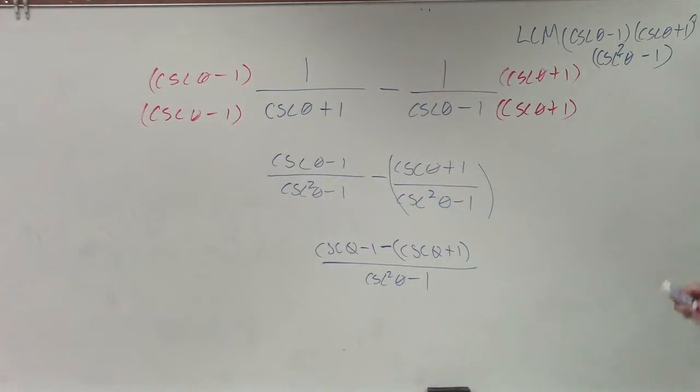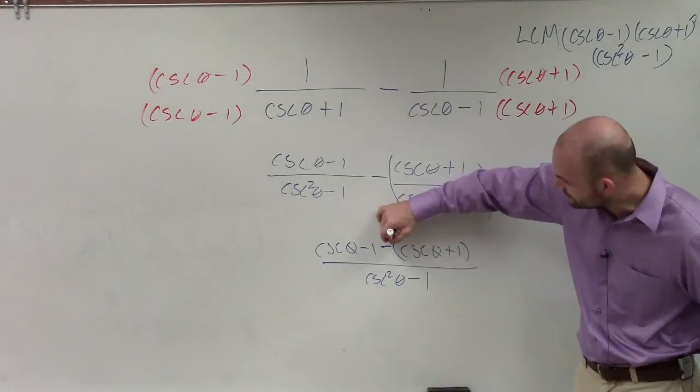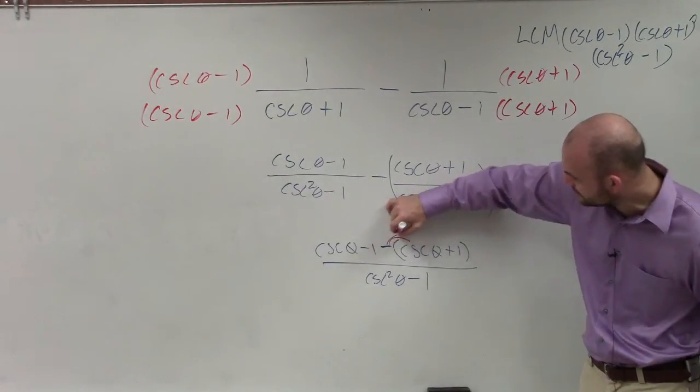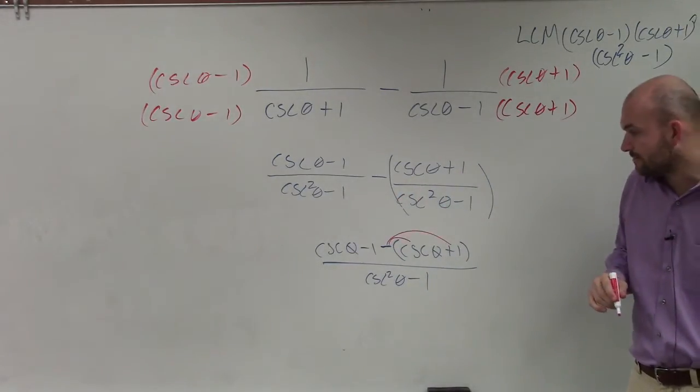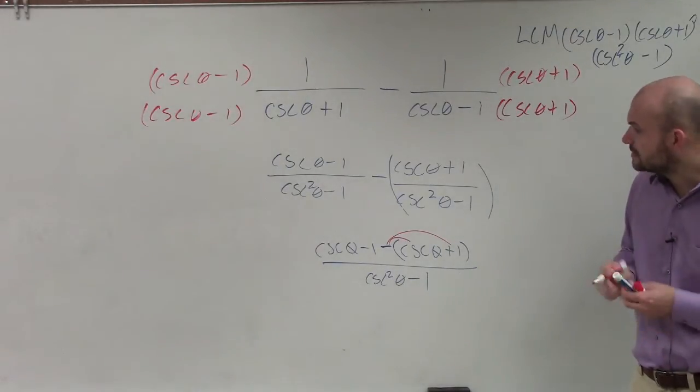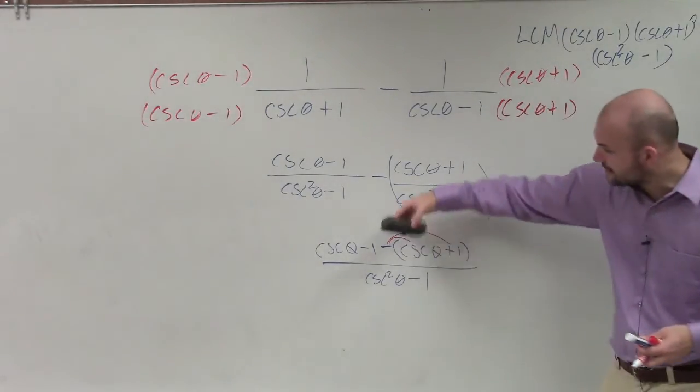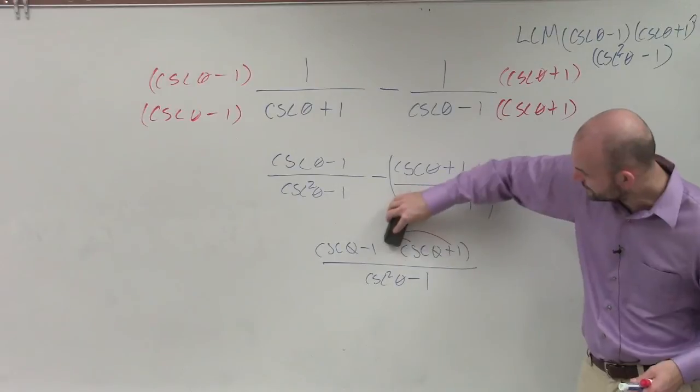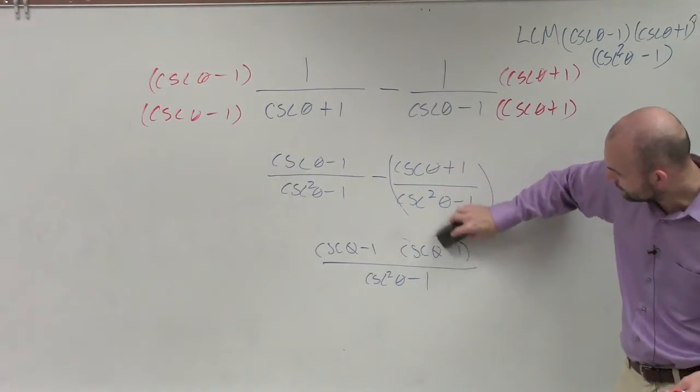Now, the reason why I say that is because now, remember, you need to apply that negative sign to cosecant and to that positive 1. So really, what that does is now that's turning that into a negative cosecant and a negative 1.